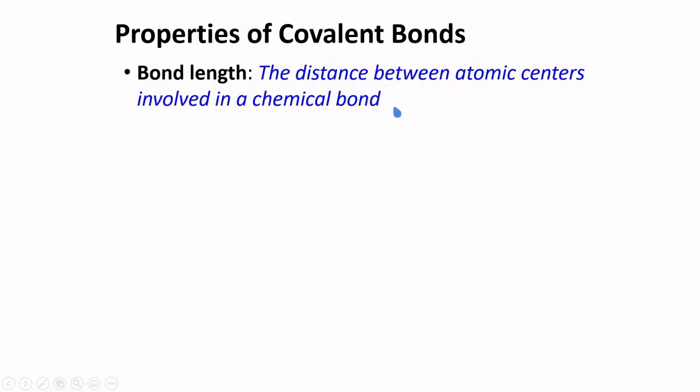Now to the properties of covalent bonds. The first one is bond length. Bond length is the distance between atomic centers involved in a chemical bond.